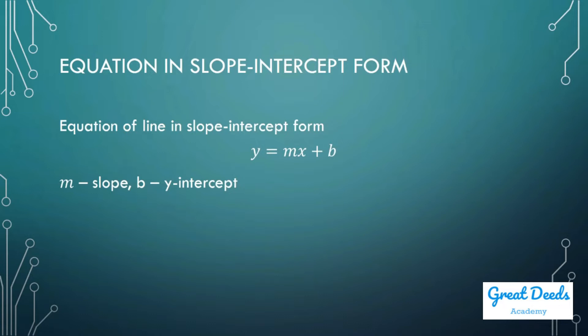Equation in slope-intercept form. I will prepare a separate lesson for the topic of equations of lines, because there are various equations of lines. But for this lesson, I want to pull this out because it will be useful when we study parallel lines and perpendicular lines. The equation of a line in slope-intercept form is y equals mx plus b, where m is the slope and b is our y-intercept.